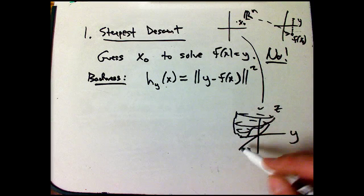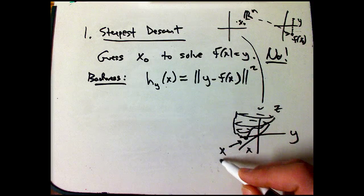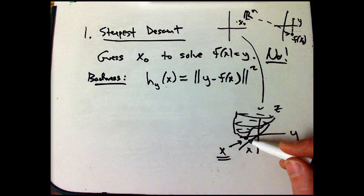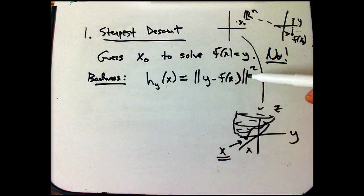It's going to be something that is always non-negative, and I'd love it if there was some special x such that that were zero, because this is zero exactly when f of x is actually equal to the desired y.